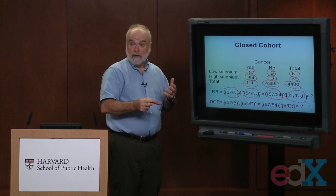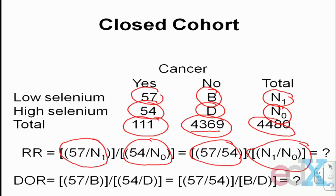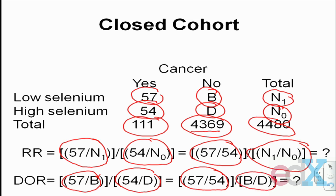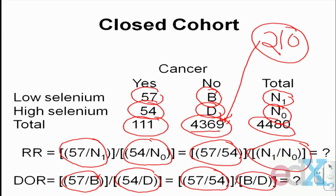From that full data he could calculate the risk ratio and disease odds ratio. The risk ratio would be 57/N1 divided by 54/N0, mathematically equal to the odds of exposure among cases (57/54) divided by the odds of exposure among everyone in the source population. By selecting only 210 controls, he hoped the observed exposure odds among those 210 would estimate the exposure odds among all 4,369 potential controls.